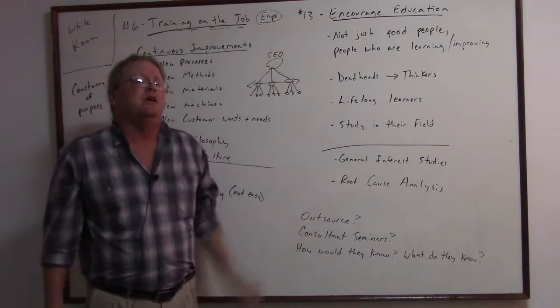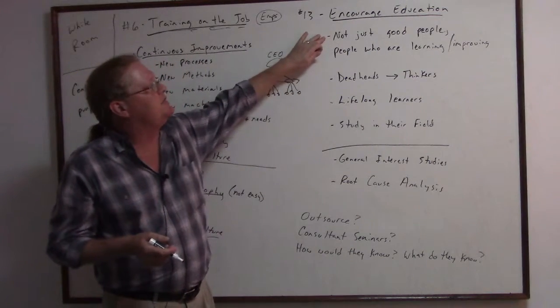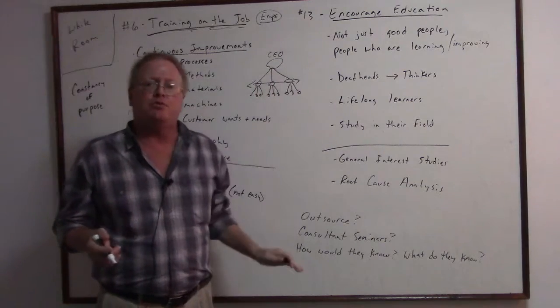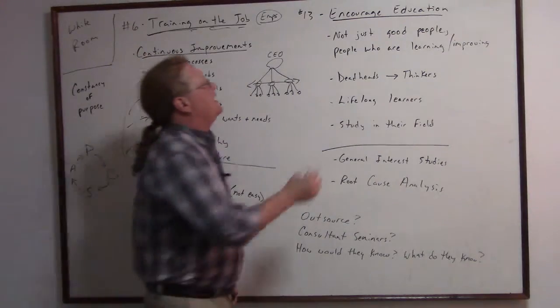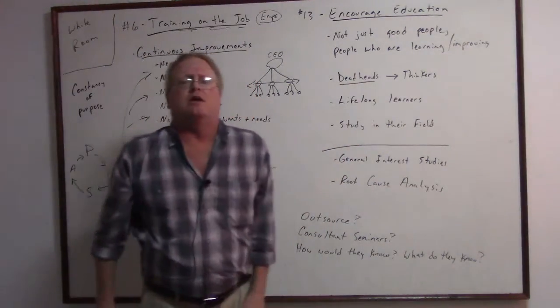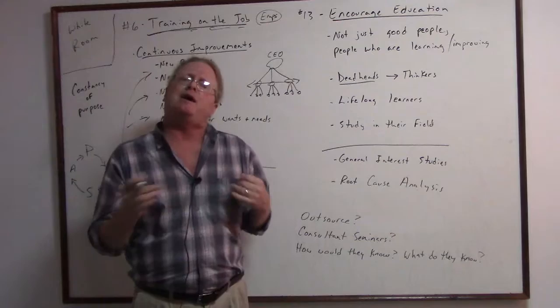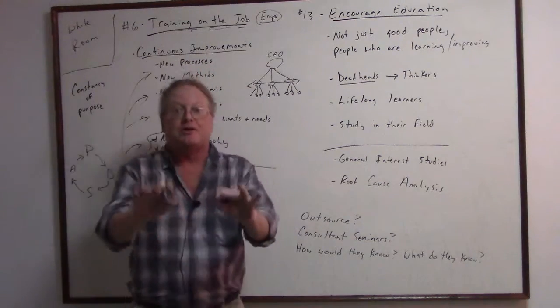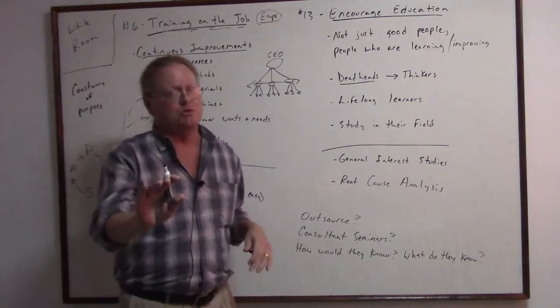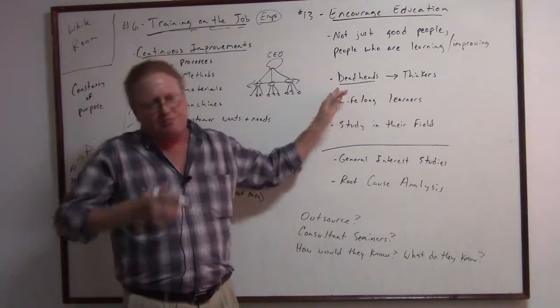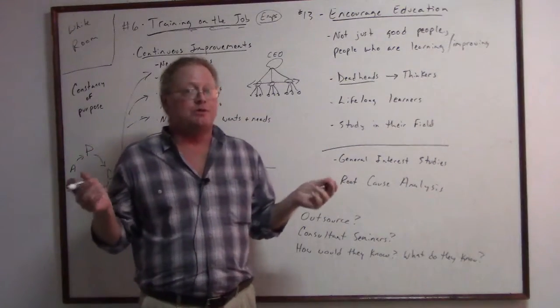So then we move on to point number 13, encourage education. Deming is saying that we don't just need good people, we need good people who are learning and improving. Those are the people that are going to help the company and the organization improve. Depending on your age, if you're maybe in your 30s, late 20s, you might have hit a pocket that you've been out of school for so long. People in the workforce, you know these people, they're set in their ways, they know the best way to do things, they're being ruined by their best efforts.